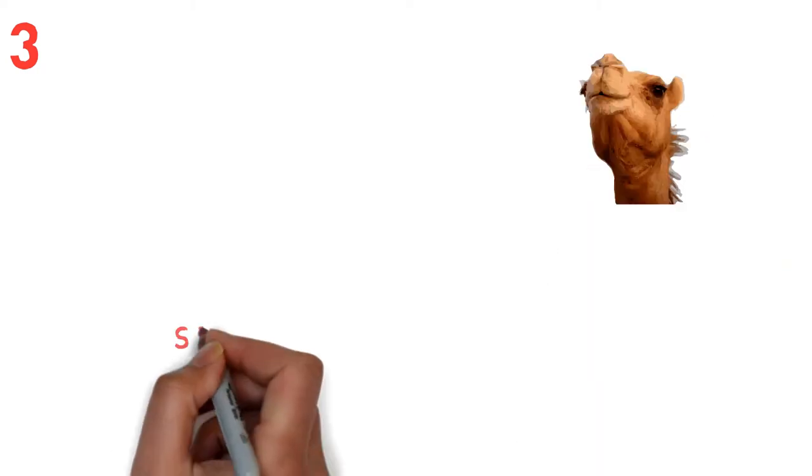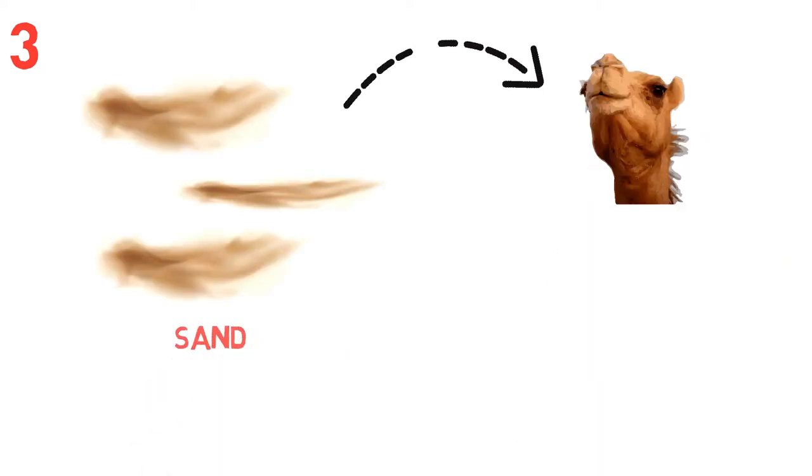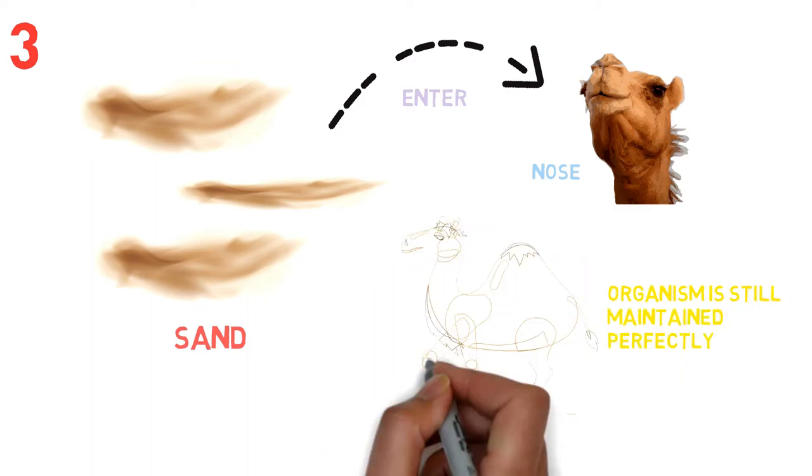3. Only a camel can close its nostrils to prevent sand from entering its nose, while its organism is still maintained perfectly.